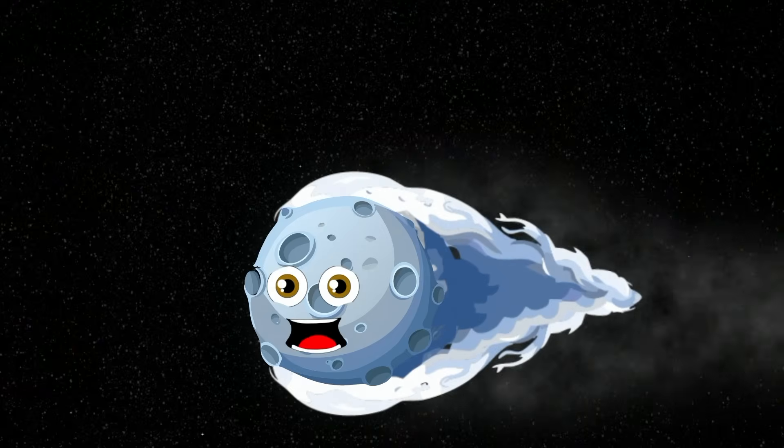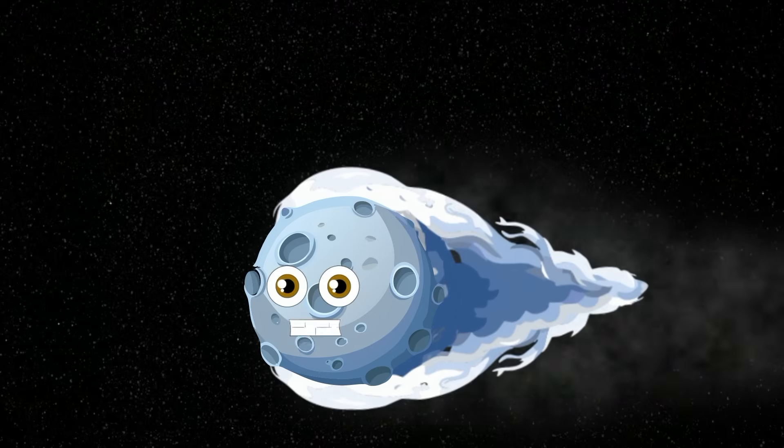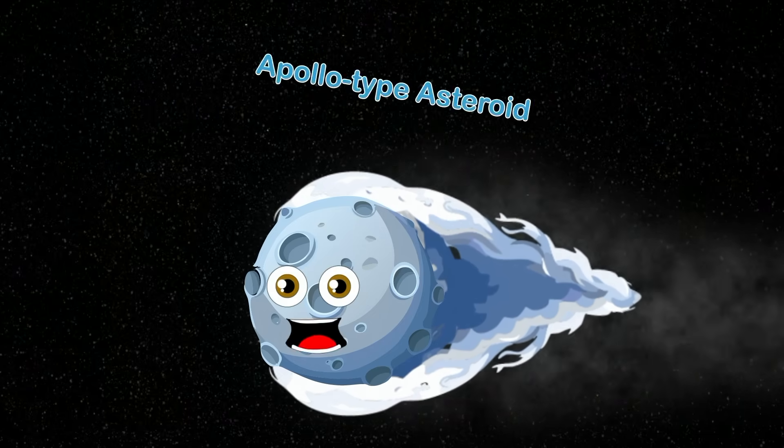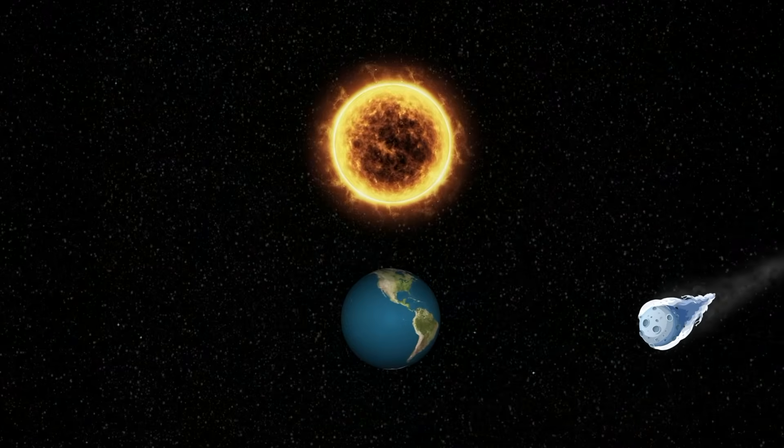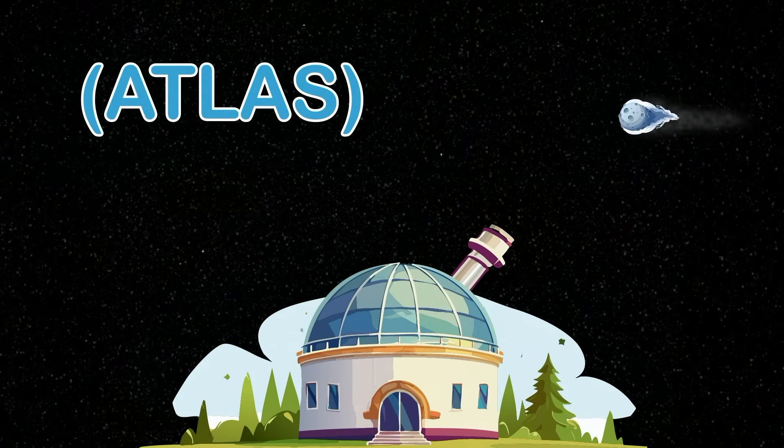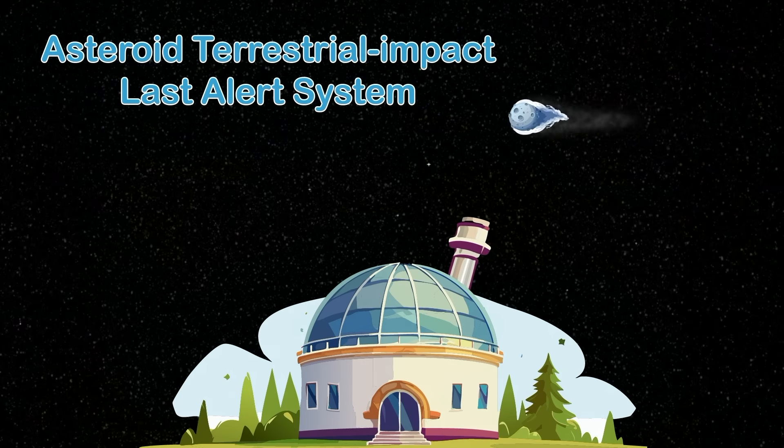Have you heard my name before? I'm 2024 YR4. An asteroid that's classified as a NEO now let's go explore. Classified as an Apollo type asteroid. My orbit crosses Earth's path around the sun. Discovered in 2024 by ATLAS in the country of Chile. That means Asteroid Terrestrial-impact Last Alert System you see.